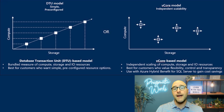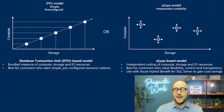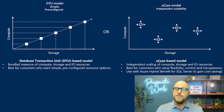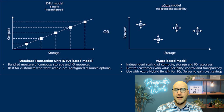On the other hand, a virtual core or vCore is going to provide more granular control over resource allocation. It allows users to choose the number of vCores allocated to them, which offers flexibility to scale resources up and down based on very specific workload requirements. vCore purchase models are preferred by users who want more precise control over their resource allocation.